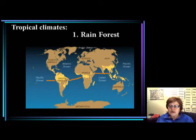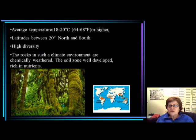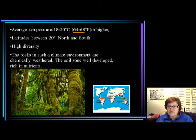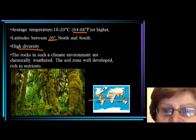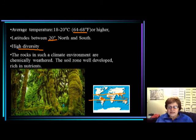Let's start with the tropical humid — the rainforest climate. On this map you can see its distribution, mostly around the equator. The average temperature of a rainforest is between 18 and 20 degrees Celsius, at latitudes between 0 and 20 degrees north and south. The diversity is extremely high, as you see in the rainforest. The rocks are extremely weathered chemically, so the soil zone is very well developed and very rich in nutrients.